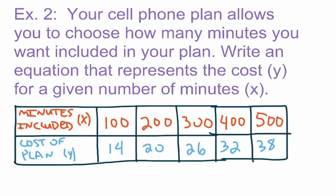Our second example is a cell phone plan problem. It says your cell phone plan allows you to choose how many minutes you want included in your plan, and we want to write an equation that represents the cost, y, for a given number of minutes, x. The top row has minutes included in multiples of 100, and the cost of the plan varies based on how many minutes are included. We want to first identify the slope, then identify the y-intercept, and use that to write the equation of the line.